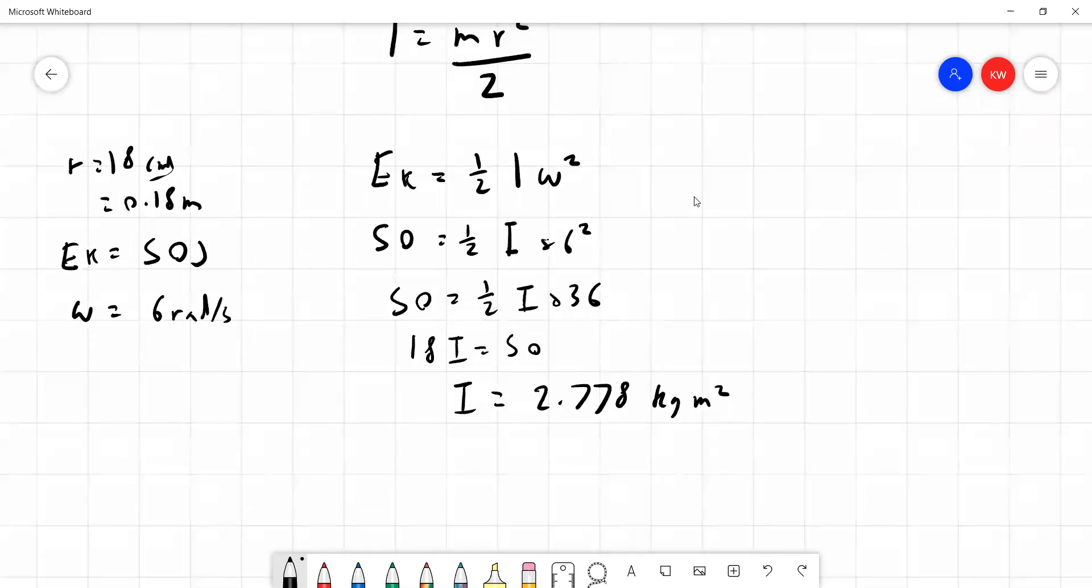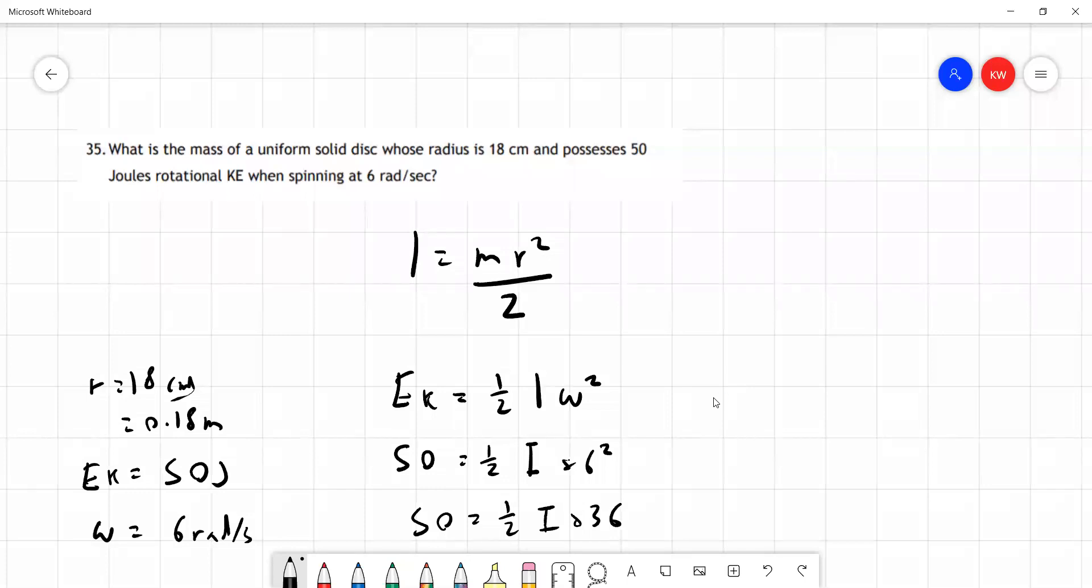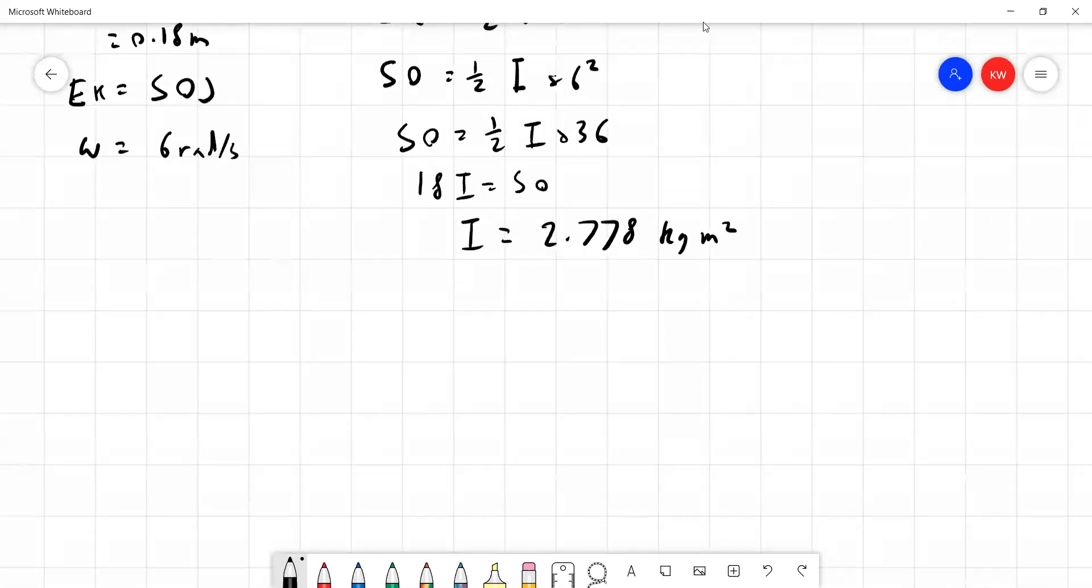So if we go back up to the top we can see this formula for I equals mr squared over 2. We now have I, we were given r in the question, so we can now use this formula in order to find the mass. So I is equal to mr squared over 2 and let's put our values in.